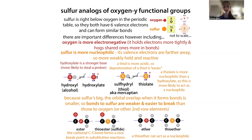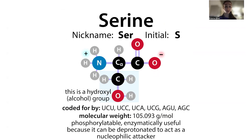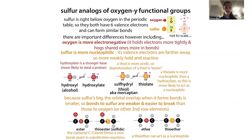Most of the molecules we talk about in biochemistry are organic — based on a hydrocarbon skeleton. Carbons and hydrogens form these skeletons, and then you can have more reactive groups. We call these functional groups. They include things like a hydroxyl or alcohol group, an ester, an ether. With all of these, we can have sulfur versions. Instead of a hydroxyl group, you have a thiol group, sometimes called a mercaptan. If you see mercapto, sulf, or thiol in a chemical name, it indicates that there's sulfur present.